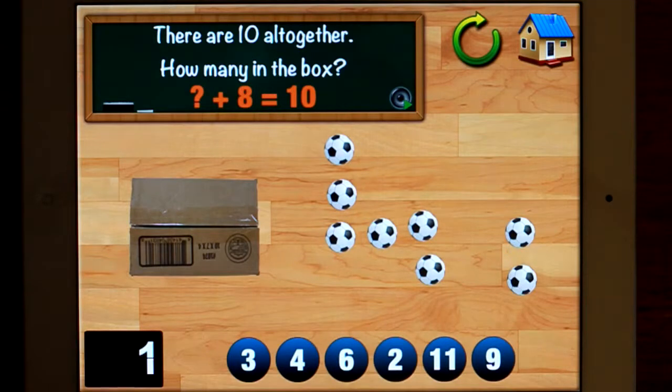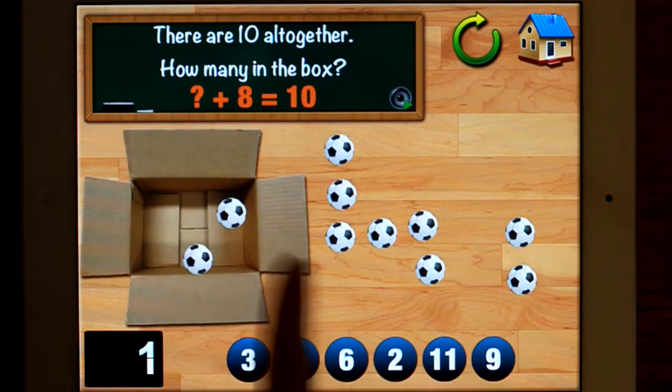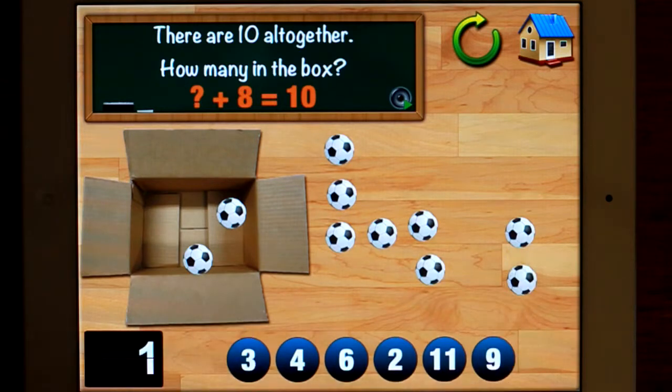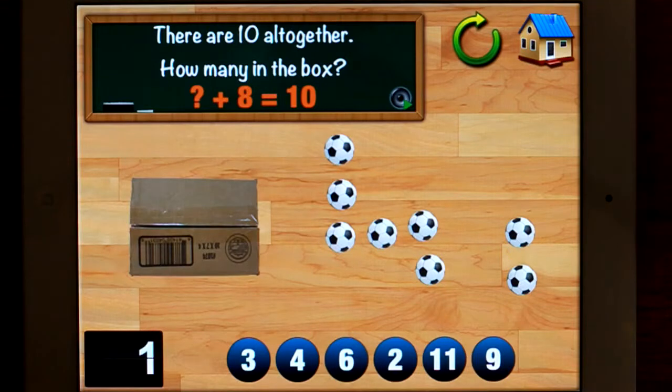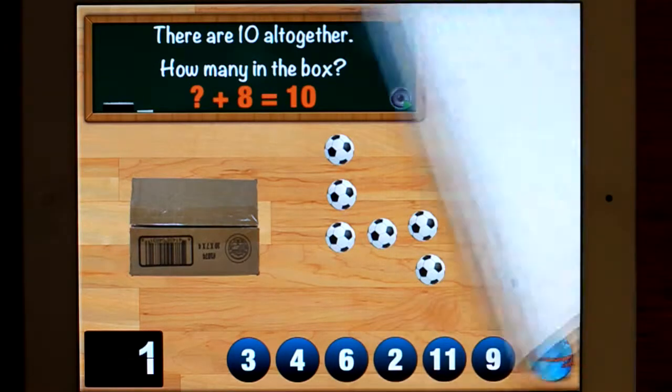If you're doing this in the classroom, you might even make a list of fact families. So two plus eight, we know it's two. Two plus eight equals ten. Ten takeaway two equals eight. Ten takeaway eight equals two. So that you're building that knowledge right back to home.